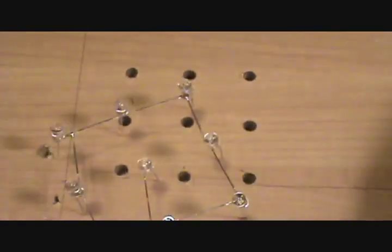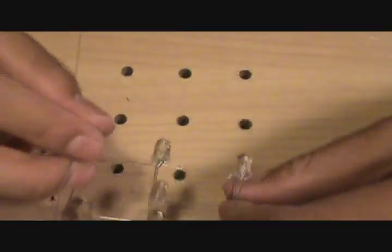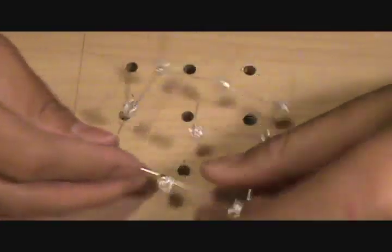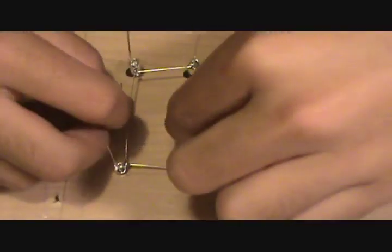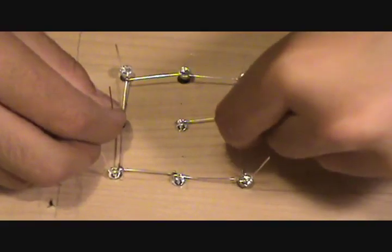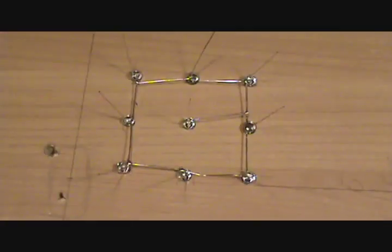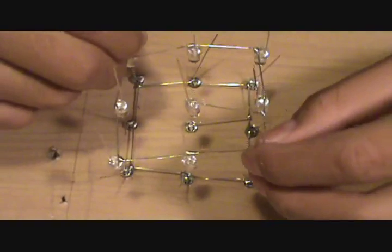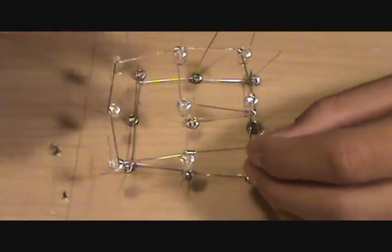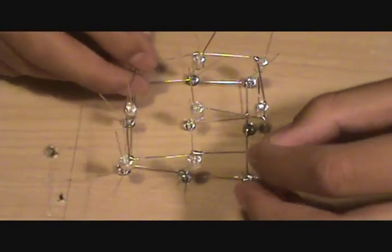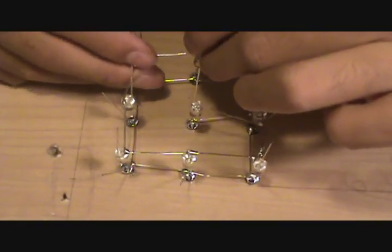Now that we've finished soldering all three layers, we're gonna take one of them, doesn't really matter which, and put it back into the jig. Then we're gonna take the second layer and place it on top. And while holding it in place, we're just gonna solder one of the corner leads.